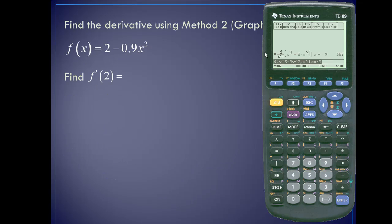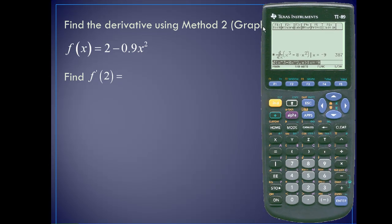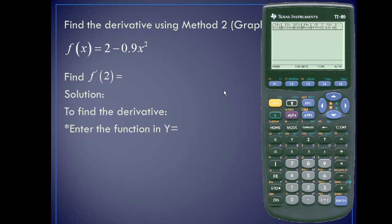Next, let's take a look at the second method of finding the derivative using the TI-89. We'll use the graphing method. So here we're actually finding the derivative evaluated at 2 for the function 2 minus .9x square. First, we'll enter the function into the y equals. So I'll put in 2 minus .9x square. Next, we'll graph.